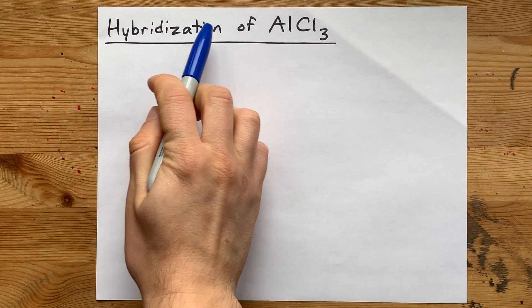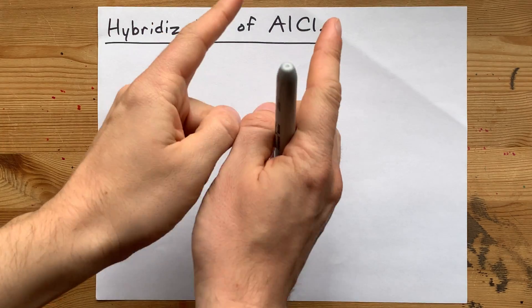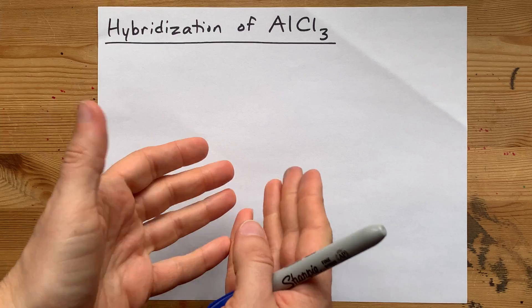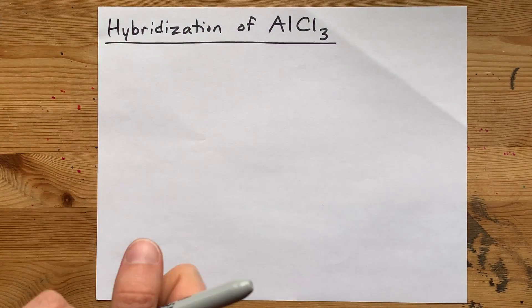If you're being asked for the hybridization of AlCl3, your teacher wants you to draw the Lewis structure and then say what the hybridization of Al is based off of that. The answer is sp2. I'll show you why.